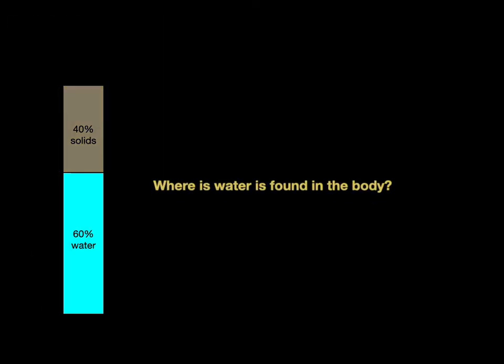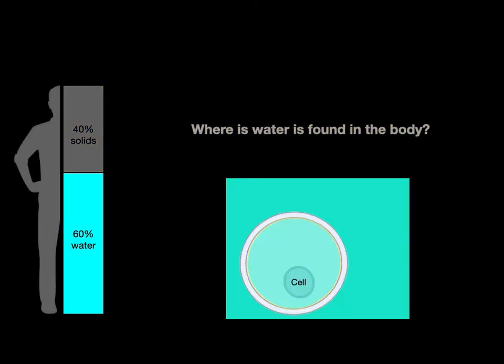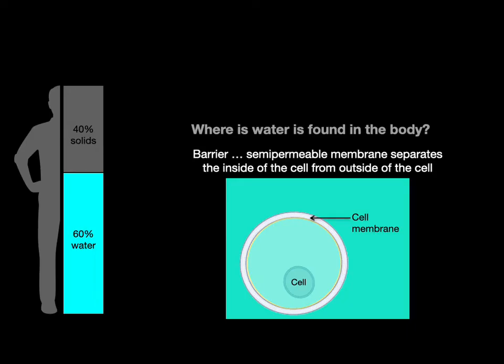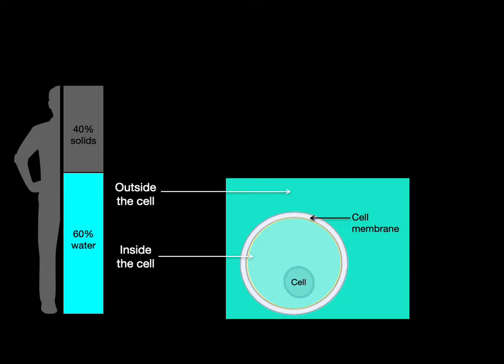Now where is this water found inside the body? If we look at this schematic, the cell membrane separates the cell from the rest of the body. The cell membrane is a semi-permeable membrane that separates the inside of the cell from the outside of the cell.